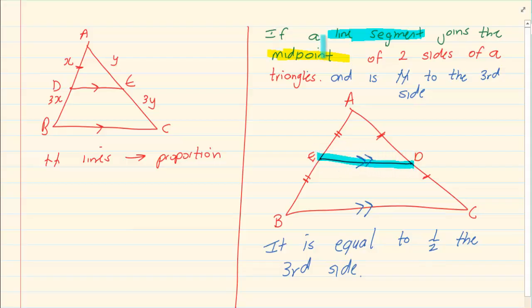So the line segment in this case is ED. So if a line, let's say ED joins the midpoint. So it joins the middle of two sides of a triangle and it is parallel to the third side of the triangle. Then it is equal to half of the third side.